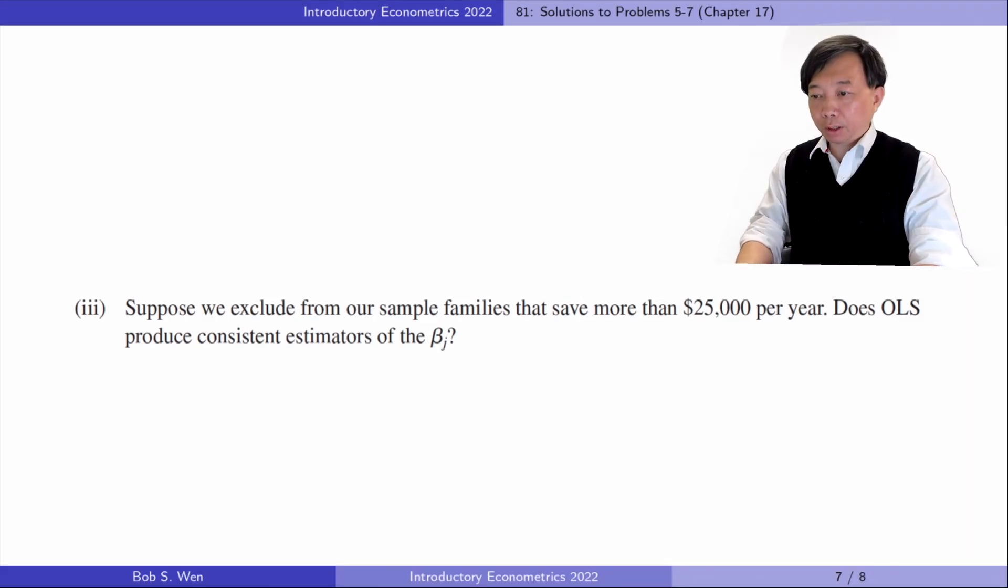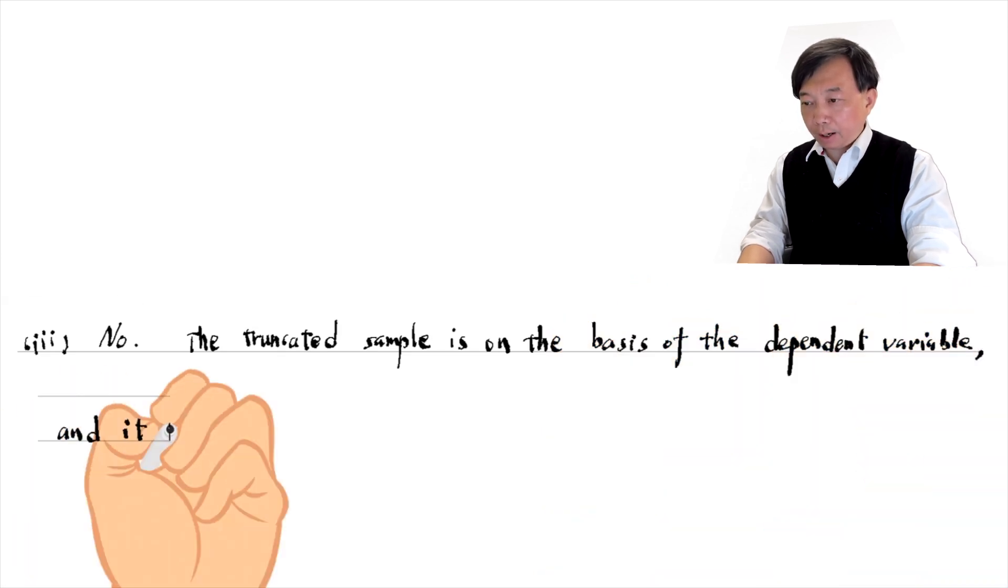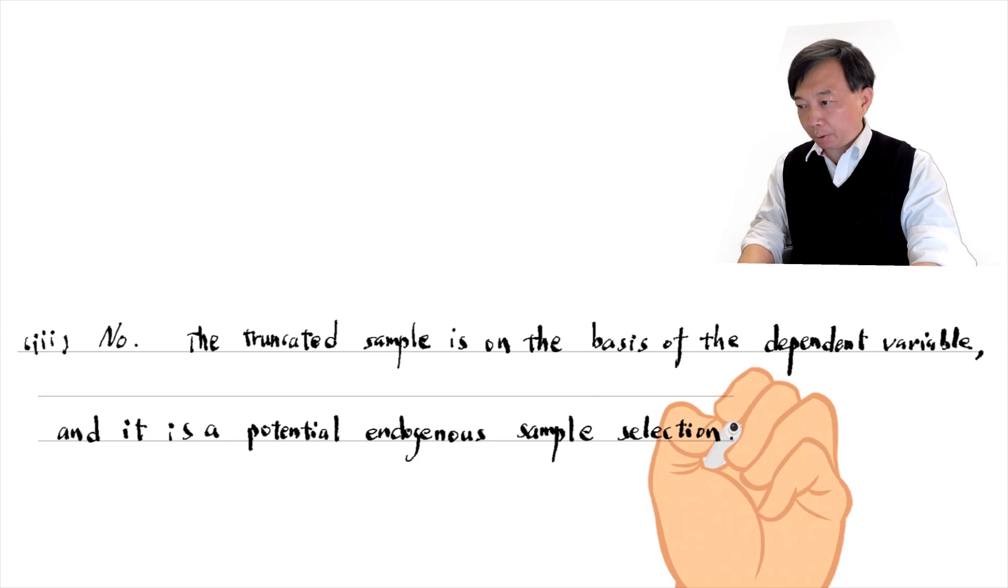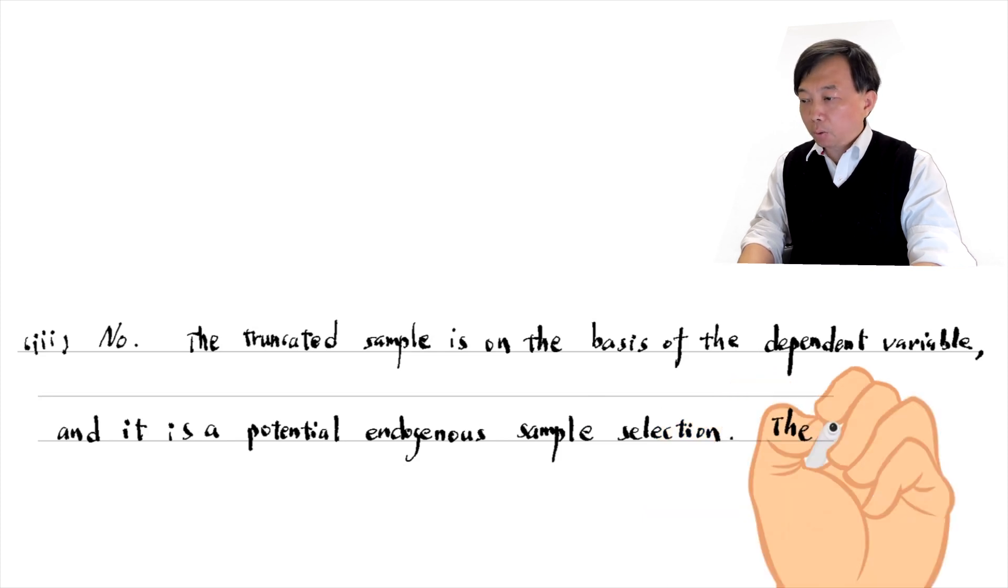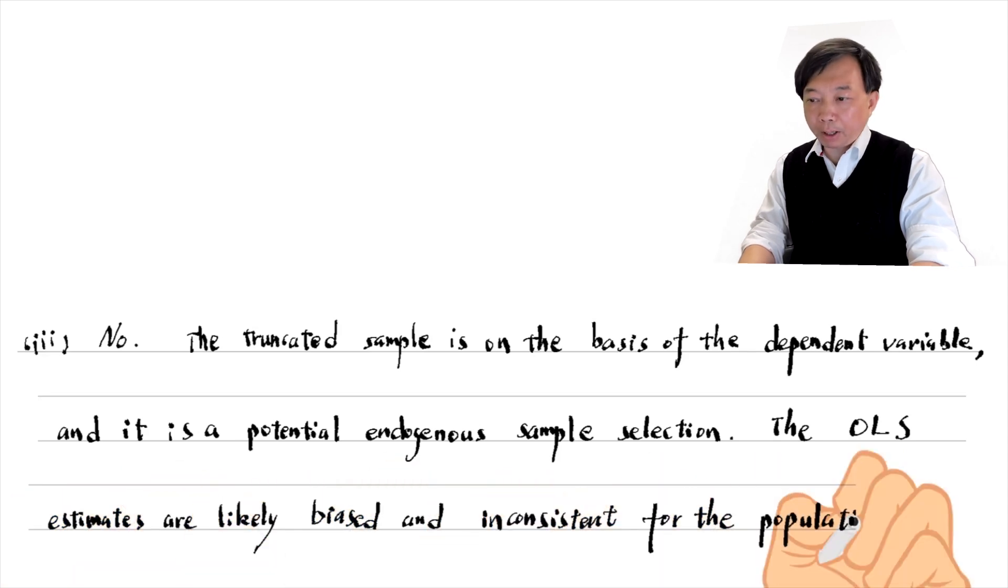In part 3, suppose we exclude from our sample families that save more than $25,000 per year. Does OLS produce consistent estimators of the betas? No, the truncated sample is on the basis of the dependent variable and it is a potential endogenous sample selection. The OLS estimates are likely biased and inconsistent for the population model.